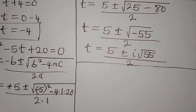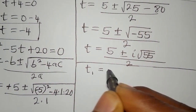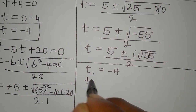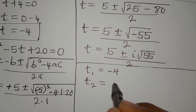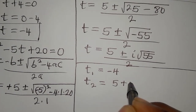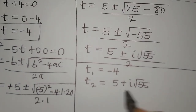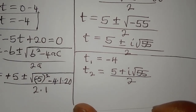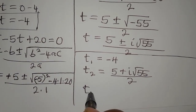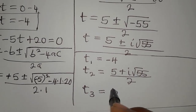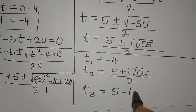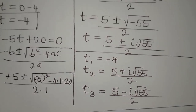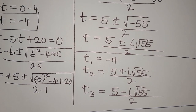So the three solutions are: t₁ equals negative 4; t₂ equals (5 plus i root 55) divided by 2; and t₃ equals (5 minus i root 55) divided by 2. These three are the solutions to the equation.